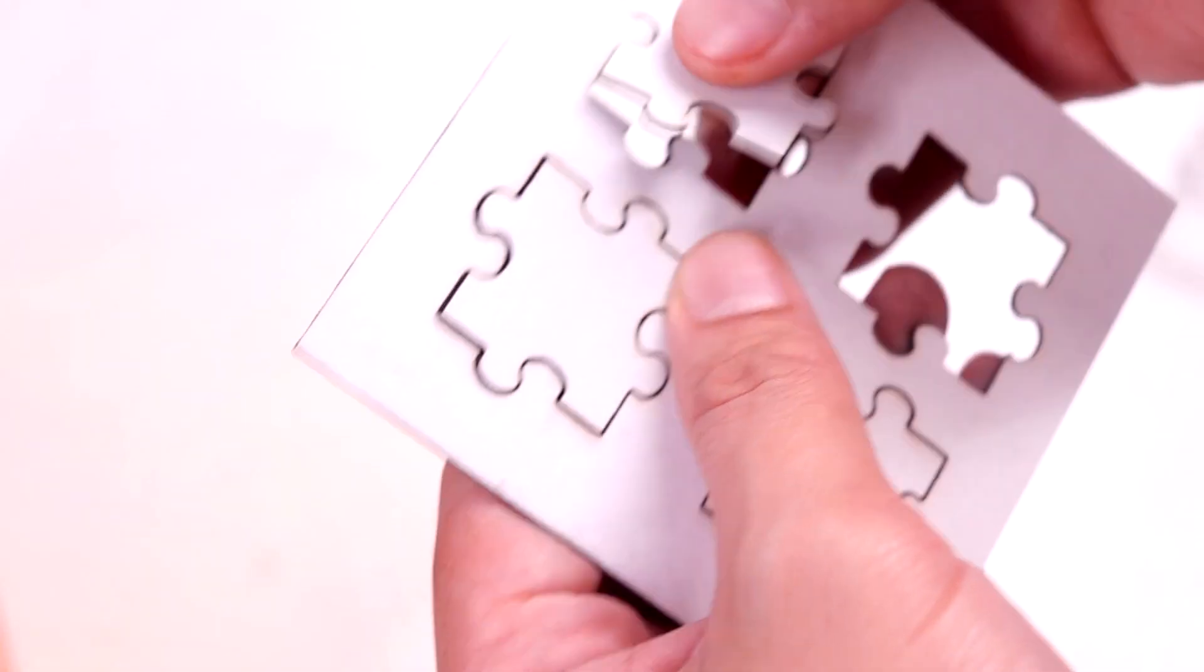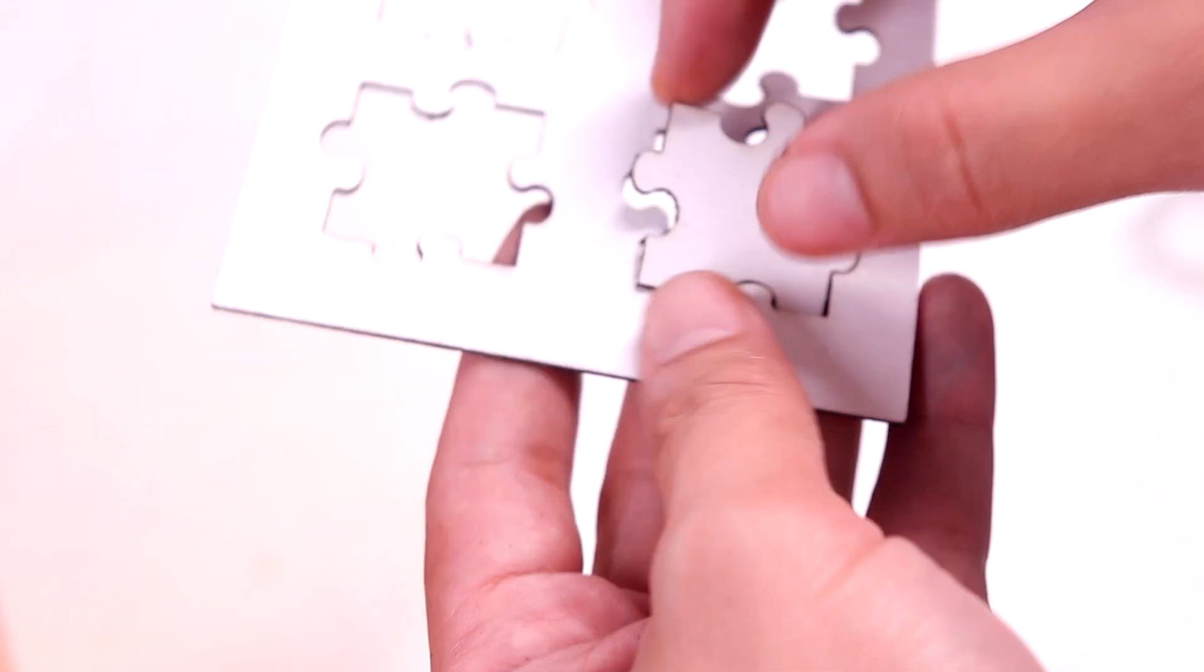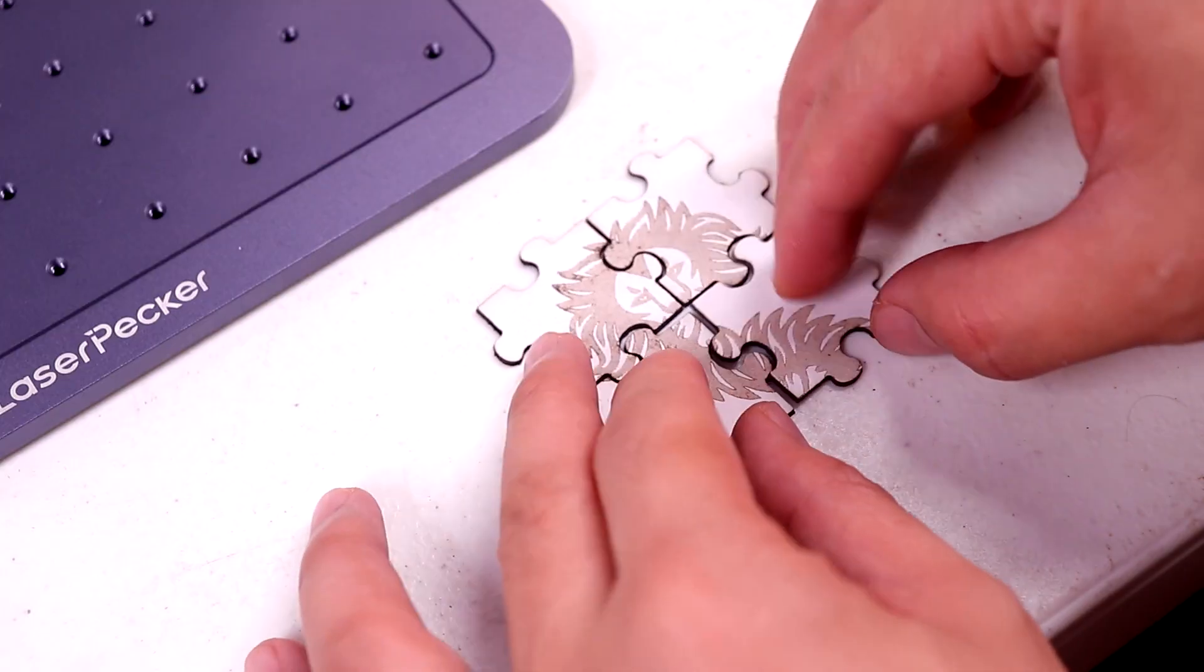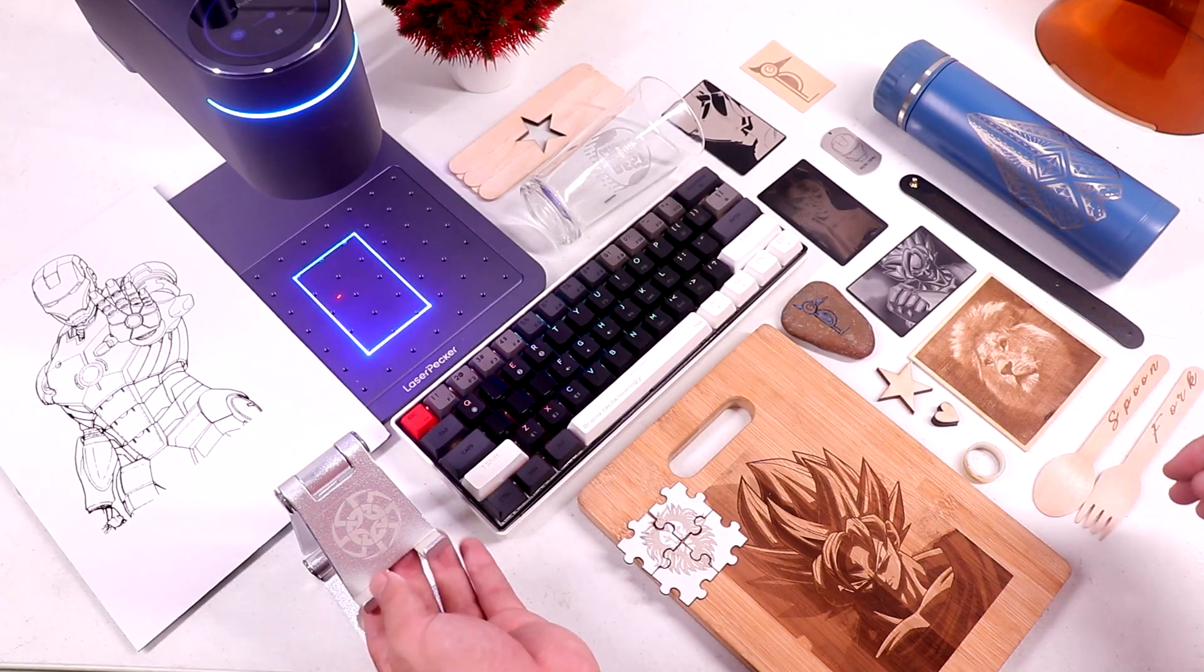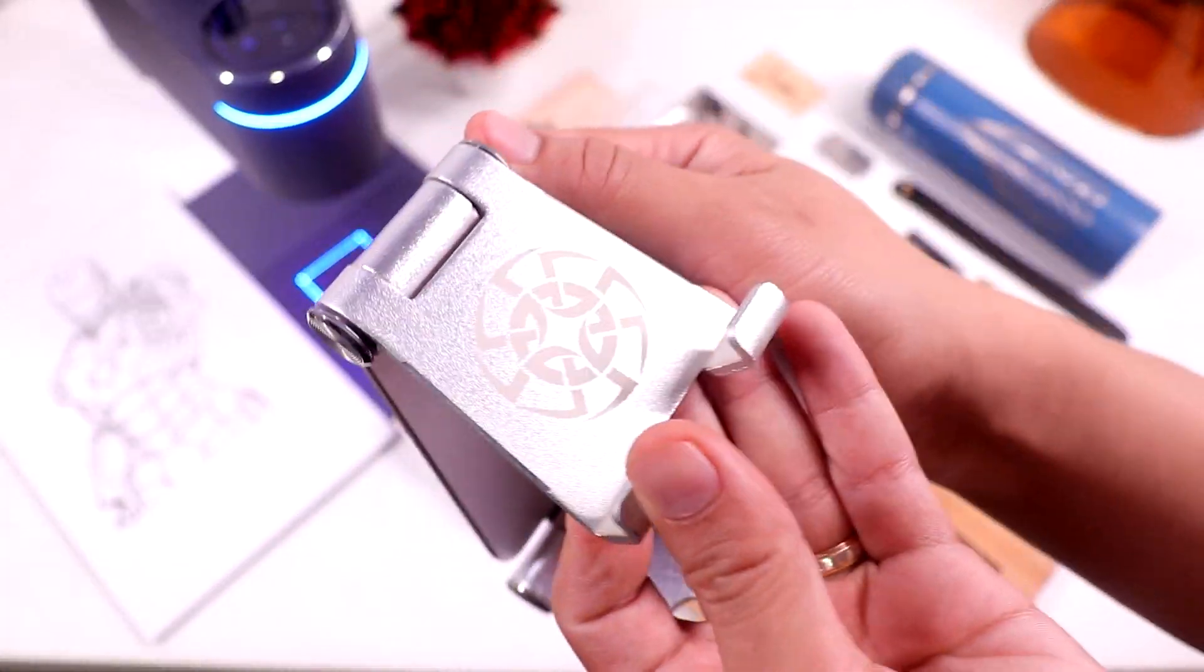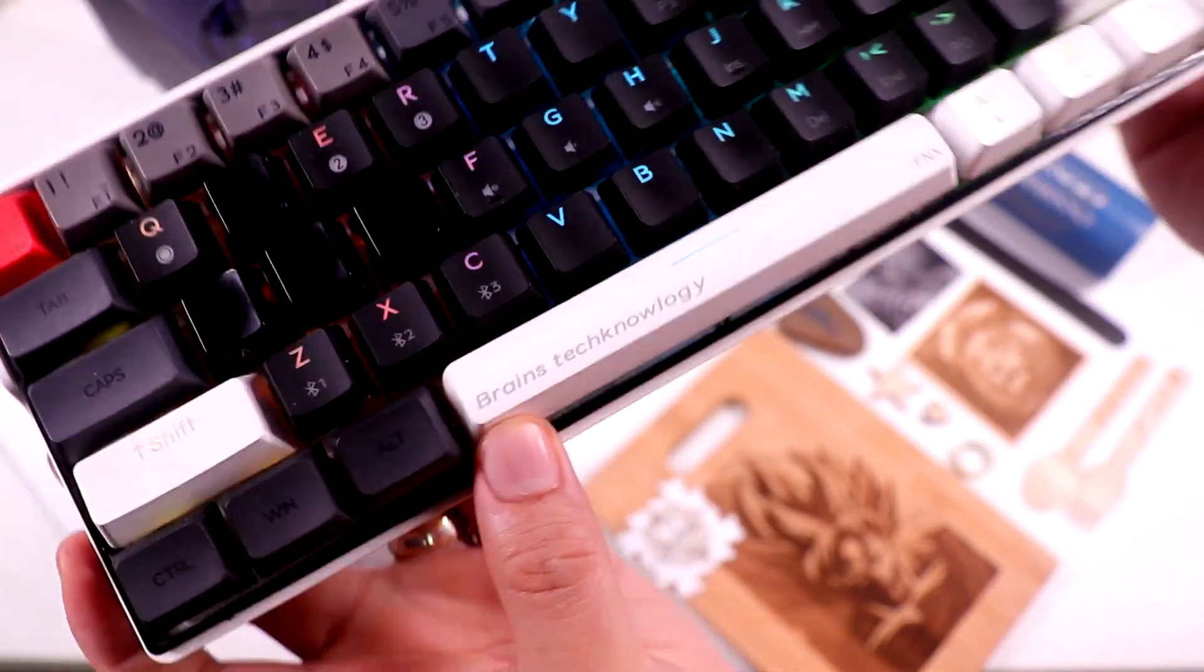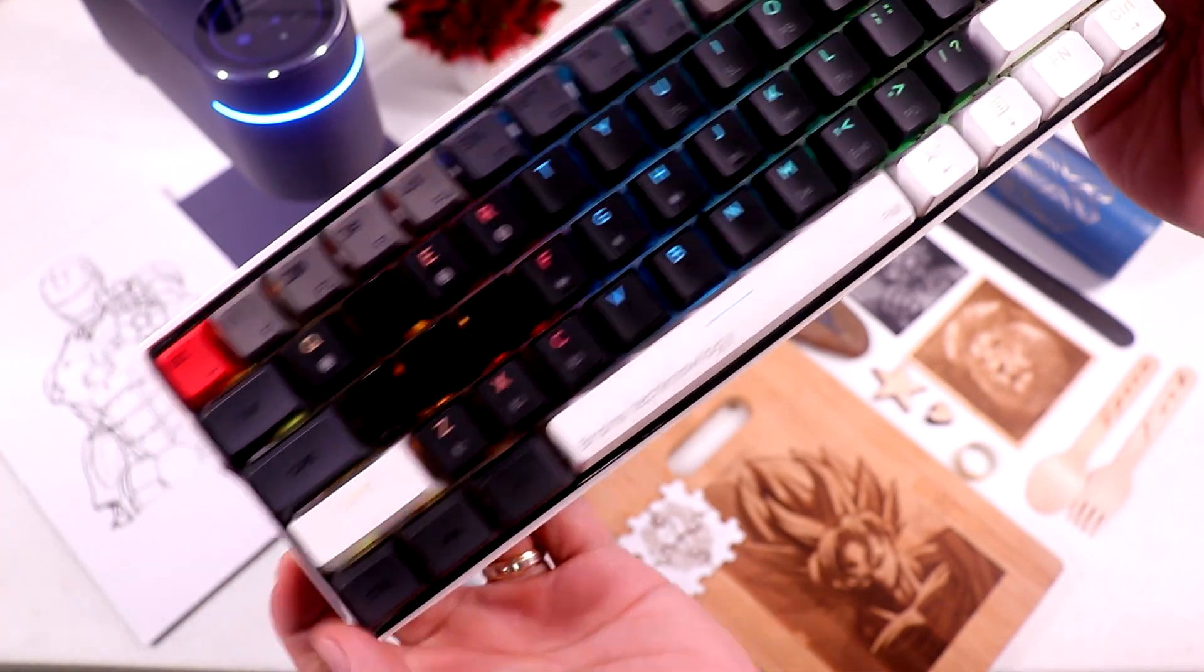So for this, I laser cut 4 puzzle pieces and engraved a lion in the middle. I also engraved on my aluminum phone stand. And then on my wireless keyboard with my channel name. And actually, it looks like a factory engraved one.